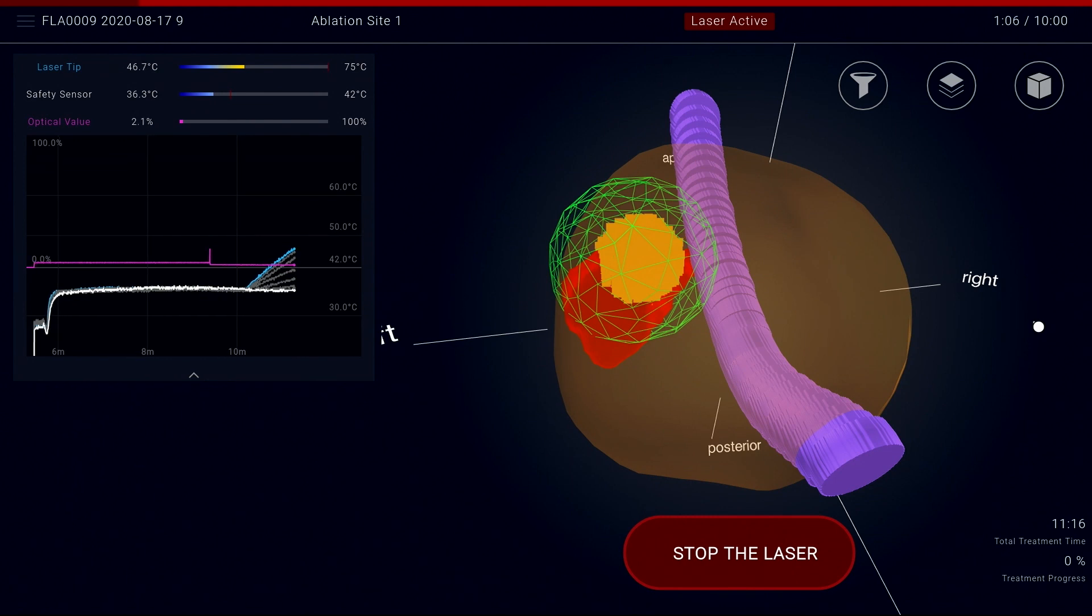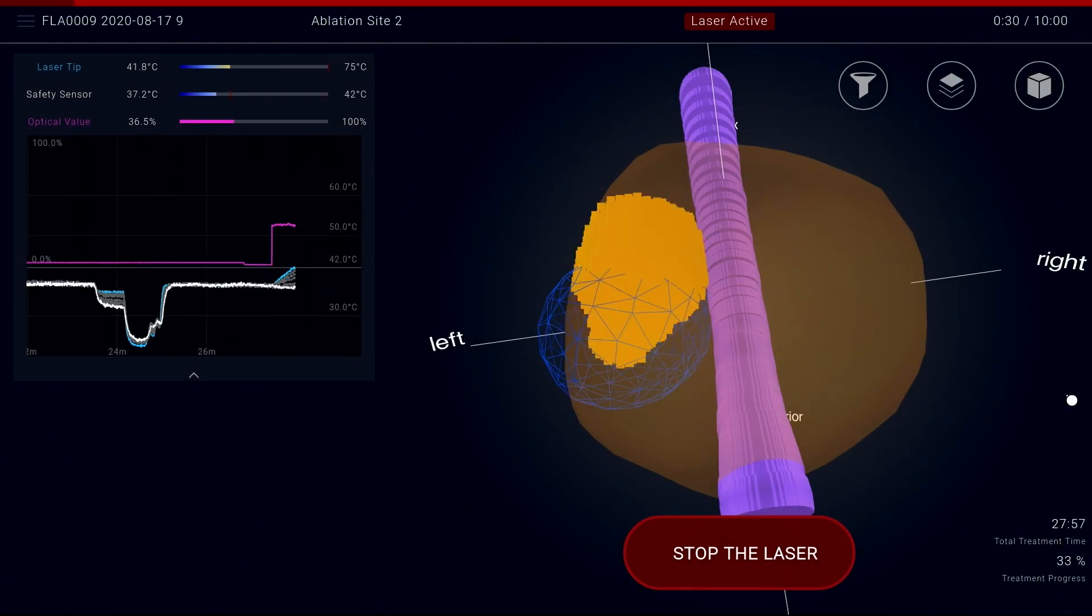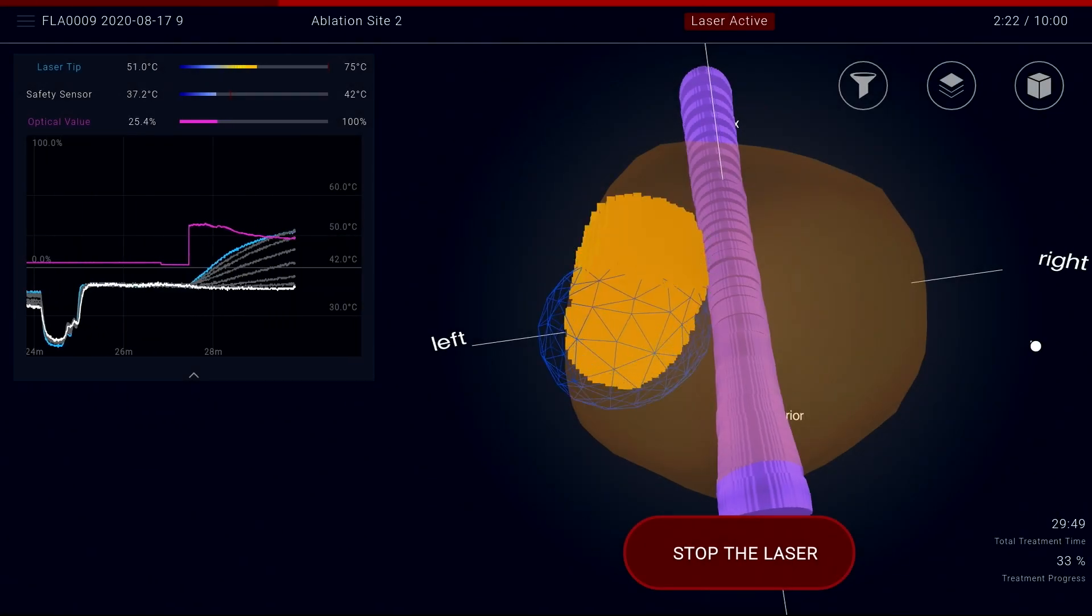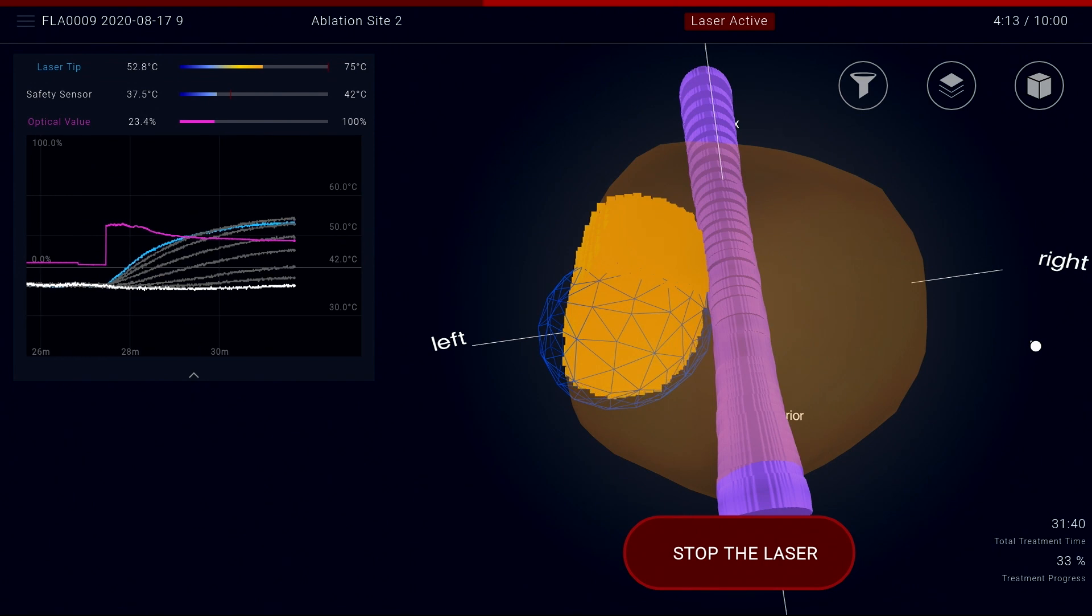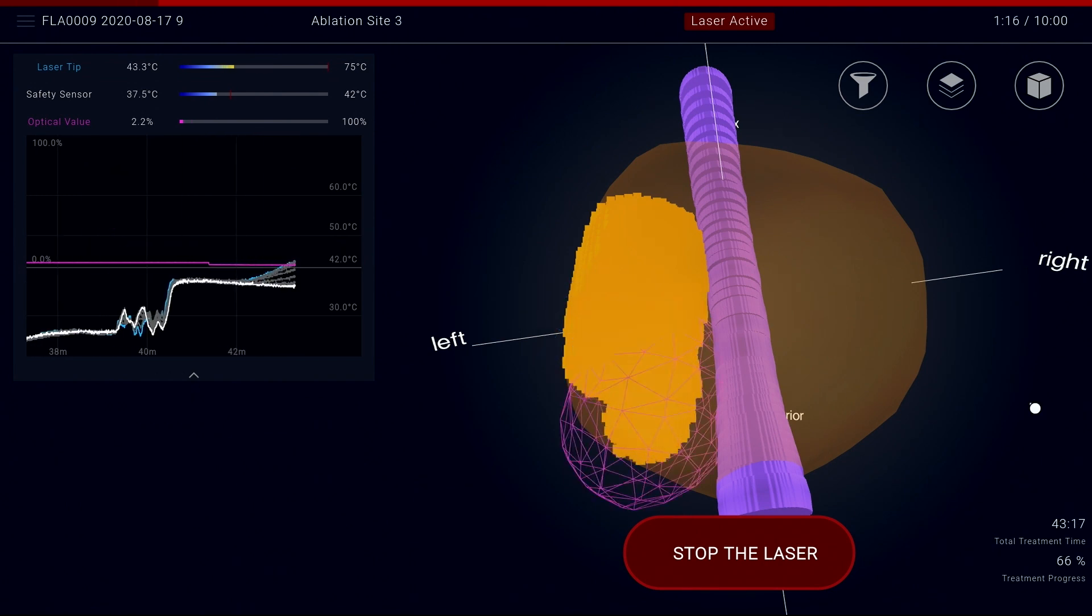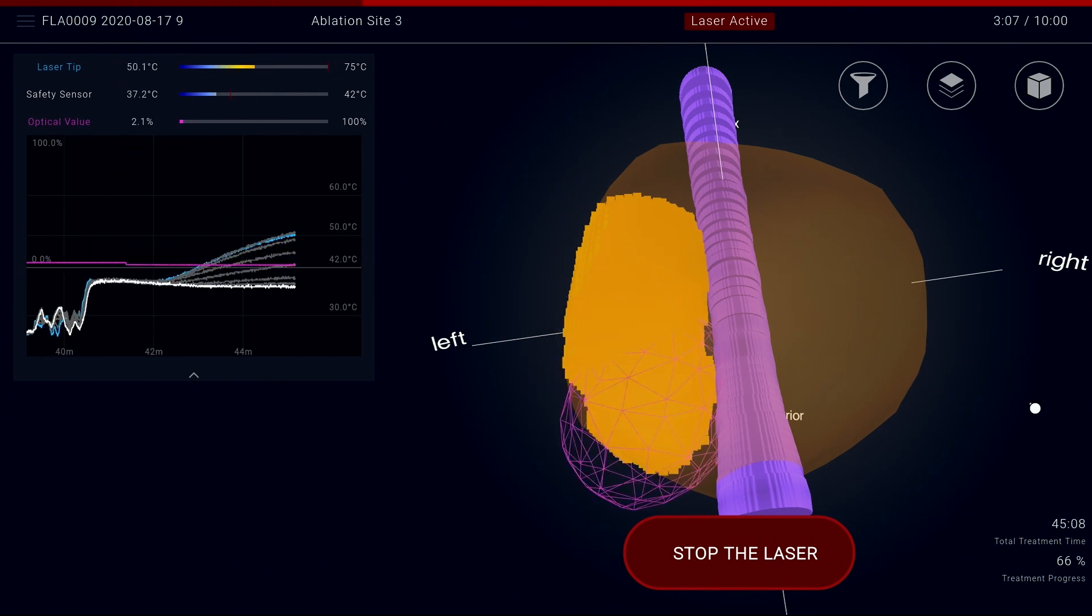A damage map based on the Arrhenius equation uses time and temperature data collected from the thermal probe to visually estimate the progression of ablated tissue. This damage map will display as yellow pixels which progressively fill the ablation outline. With each treatment location, the damage map is expanded to fill the treatment plan.